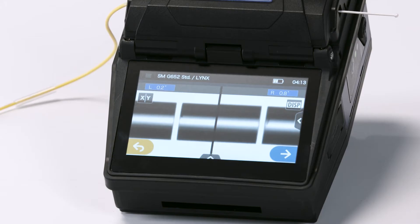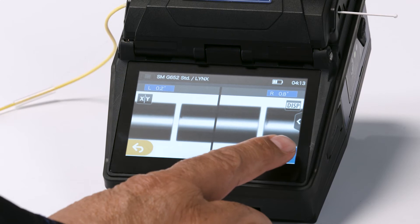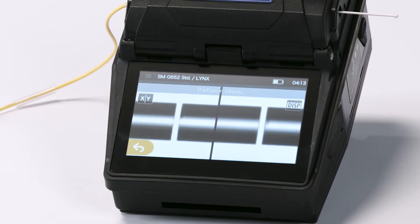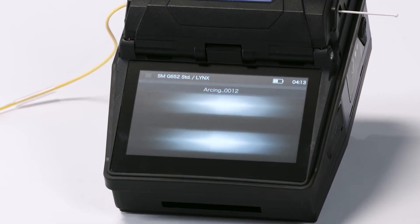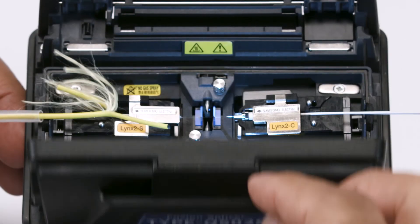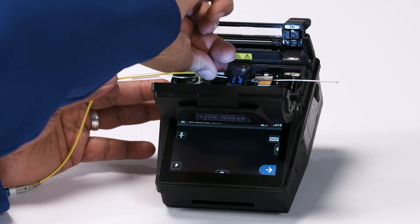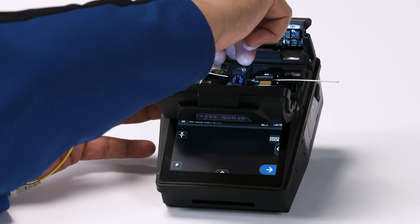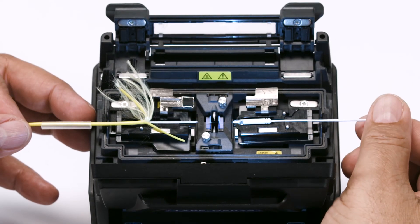Close the hood. Now you're ready to splice. To perform the splice, engage the set icon on the touch screen monitor. Fibers will fuse. Once complete, gently remove the fibers from the fiber holder. Be careful with your new splice. You don't want to break it.